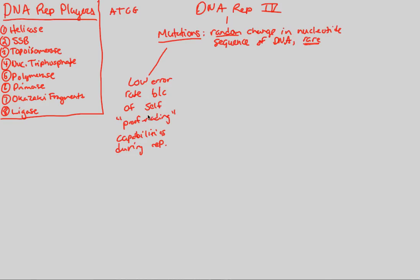This is amazing. You sometimes have mistakes, but what happens is a polymerase enzyme — one of the polymerases specifically involved in proofreading — comes in and fixes the mistake. Not only does it fix the mistake, it takes out the error and puts in the correct nucleotide — the correct A, T, C, or G — which is incredible. This proofreading capability is something we should definitely be thankful for.